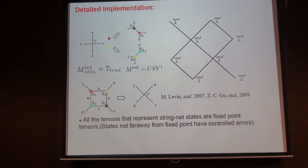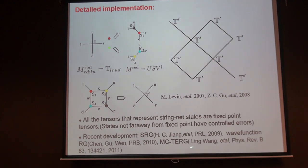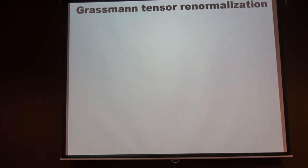A key test for any such algorithm is whether it correctly handles long-range entanglement — placing a fixed-point string net wave function inside the algorithm with no truncation error should give exact results. More advanced methods exist, such as second renormalization group and a wave function renormalization scheme developed by Ling Wang, which gives much better efficiency. If enough computational resources are available and calculations can be distributed over many CPUs, the tensor renormalization mixture algorithm is currently the best method because it parallelizes easily.